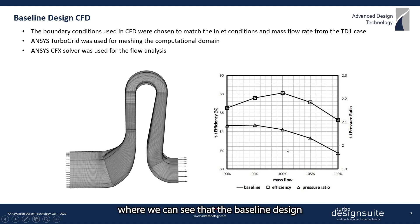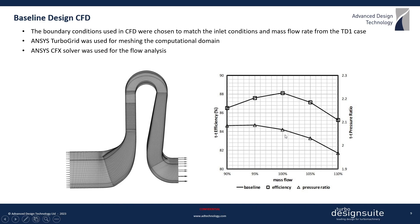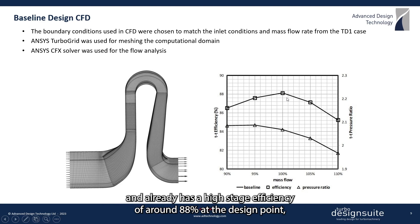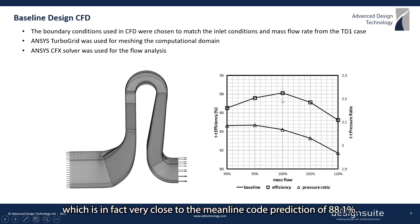The baseline design is able to meet the pressure ratio requirement of 2, and already has a high stage efficiency of around 88 percent at the design point, which is in fact very close to the meanline code prediction of 88.1 percent.